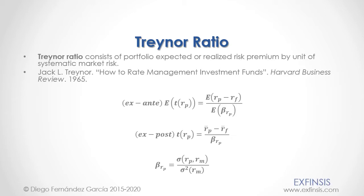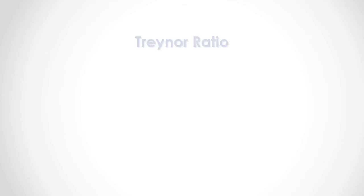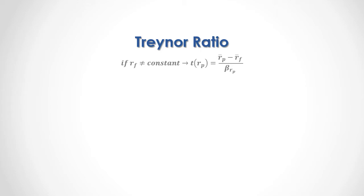Within this video tutorial, we will only be studying the ex-post or realized Treynor Ratio. If the risk-free rate of return is not constant through time, then the portfolio returns Treynor Ratio equals: in the numerator, the portfolio returns mean minus the risk-free rate of return mean, divided by the portfolio market beta.